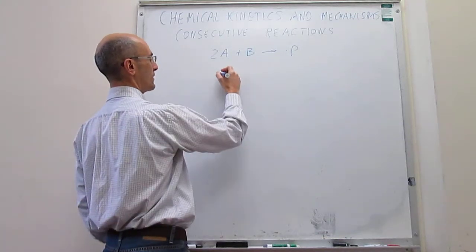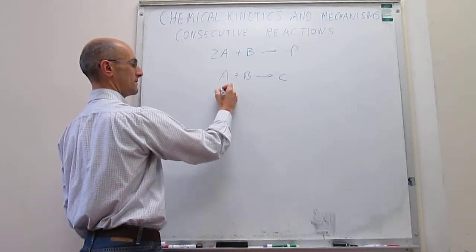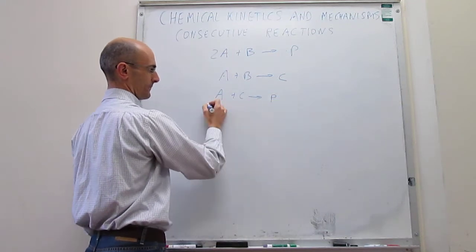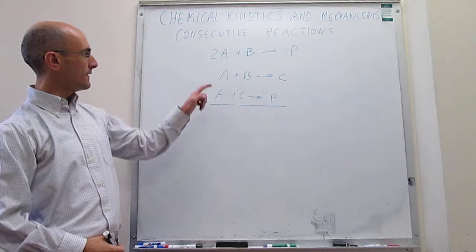And this overall reaction mechanism can be divided into two steps. In the first one we have that A plus B generates C. And the second step is A plus this intermediate C, gives our product. So again, it's a two-step process and that will be the overall reaction.